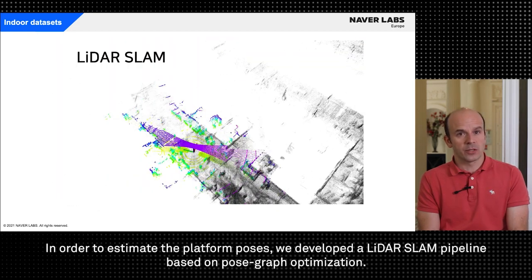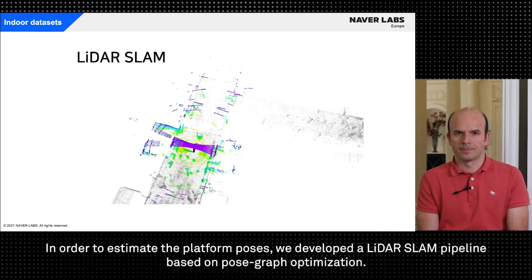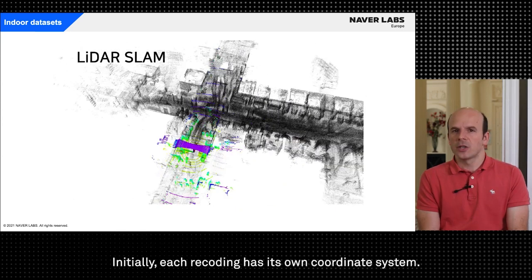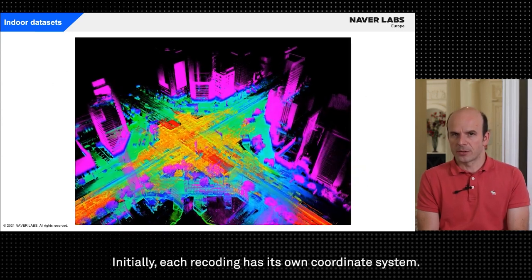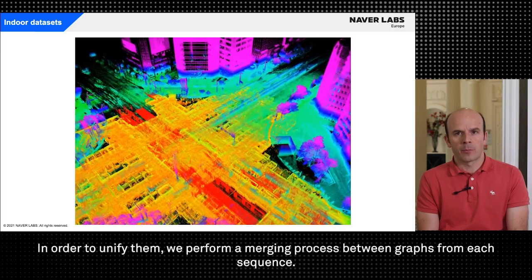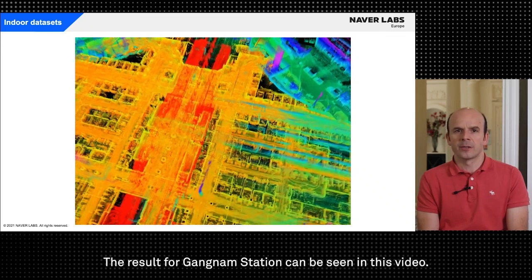Here you can see how we used our Capture platform to scan the public spaces. In order to estimate the platform poses we developed a LIDAR SLAM pipeline based on pose graph optimization. Initially each recording has its own coordinate system. In order to unify them we perform a merging process between graphs from each sequence. The result for Gangnam station can be seen in this video.